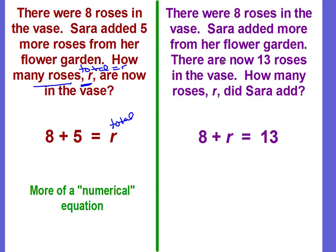Looking at the situation on the right, there were eight roses in the vase. Sarah added more from her flower garden. There are now 13 roses in the vase. How many roses, R, did Sarah add?